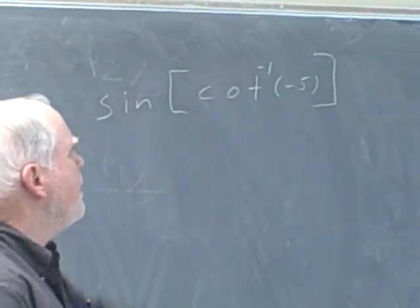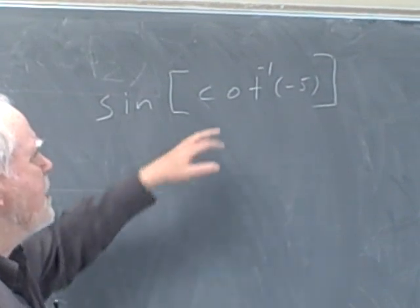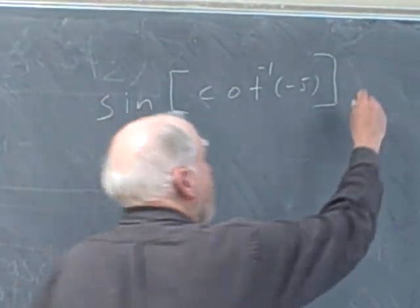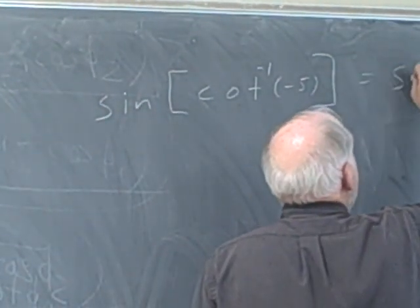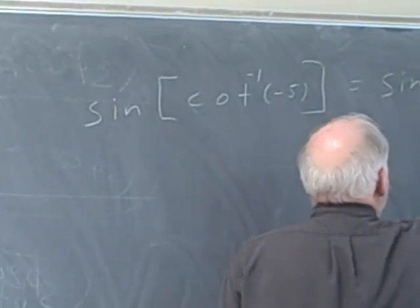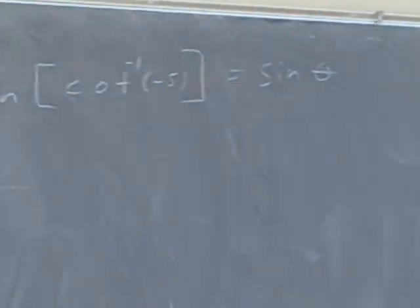We have to find, looking at this cotangent inverse and saying, I don't think that's going to be a common angle. I know it's an angle. In fact, we're going to say this is the sine of theta, and we're going to learn things about theta.